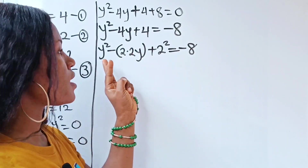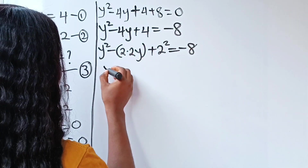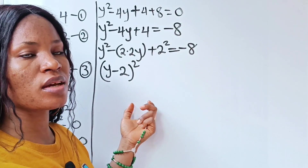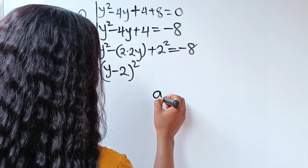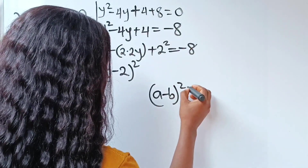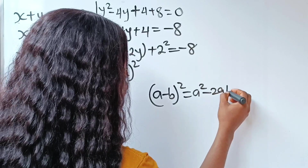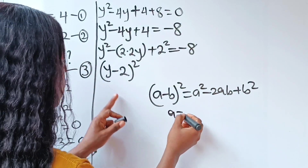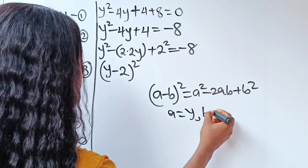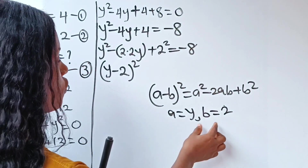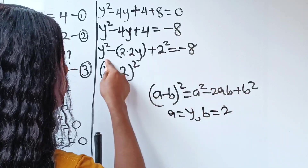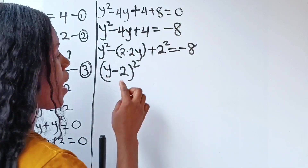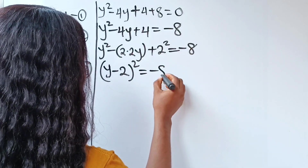Notice that this is the same as (y minus 2) squared. Using the algebraic identity that states (a minus b) squared equals a squared minus 2ab plus b squared, where our a equals 1, if you substitute this in, you get the whole expression. So we can replace it with (y minus 2) squared is equal to minus 8.